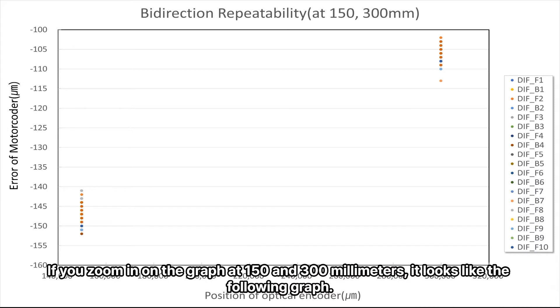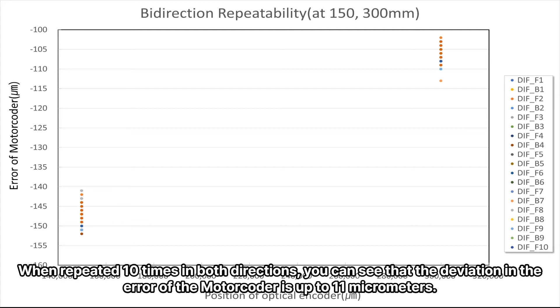If you zoom in on the graph at 150 and 300 millimeters, it looks like the following graph. When repeated 10 times in both directions, you can see that the deviation in the error of the motor coder is up to 11 micrometers.